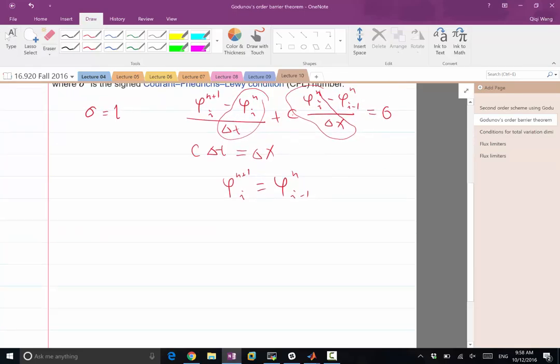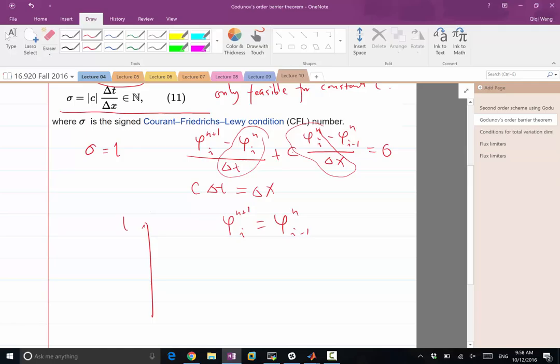So in a spacetime solution, so if this is t, this is x, I'm saying the grid points at the next time step is equal to the grid points here, which is completely reasonable because the characteristics are exactly aligned with the grid points. So the solution here is exactly equal to the solution here, and I get exact solution.